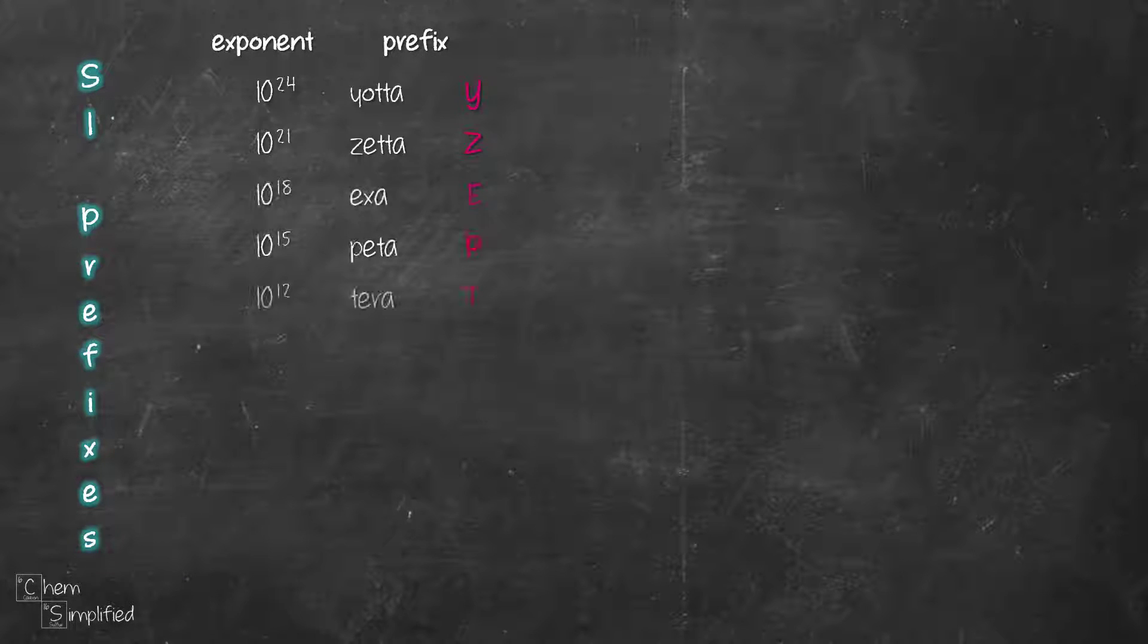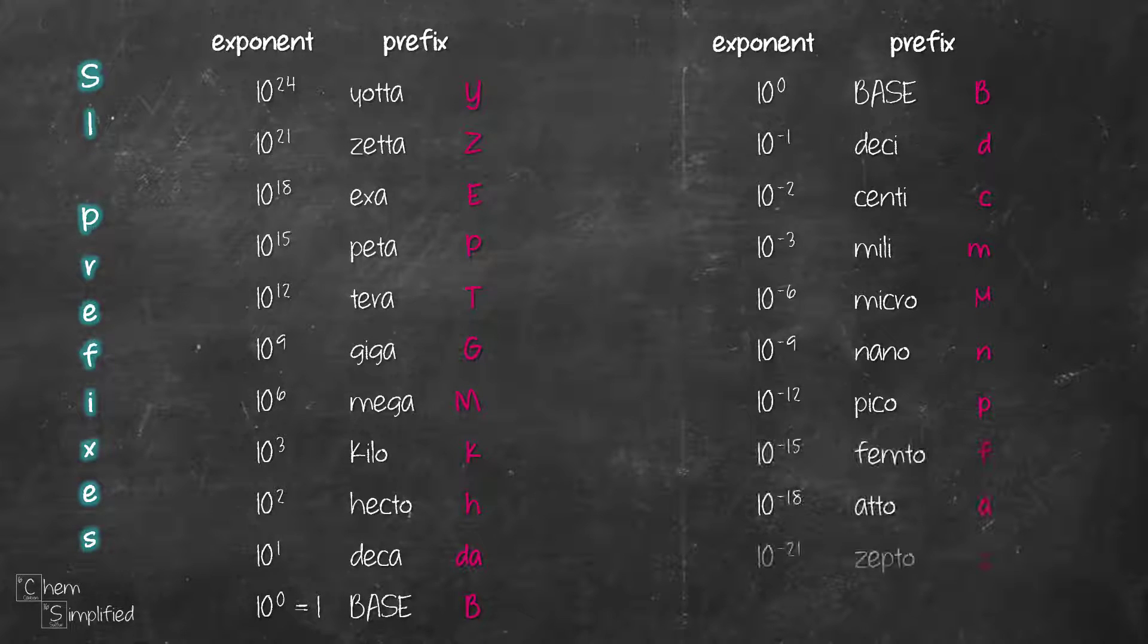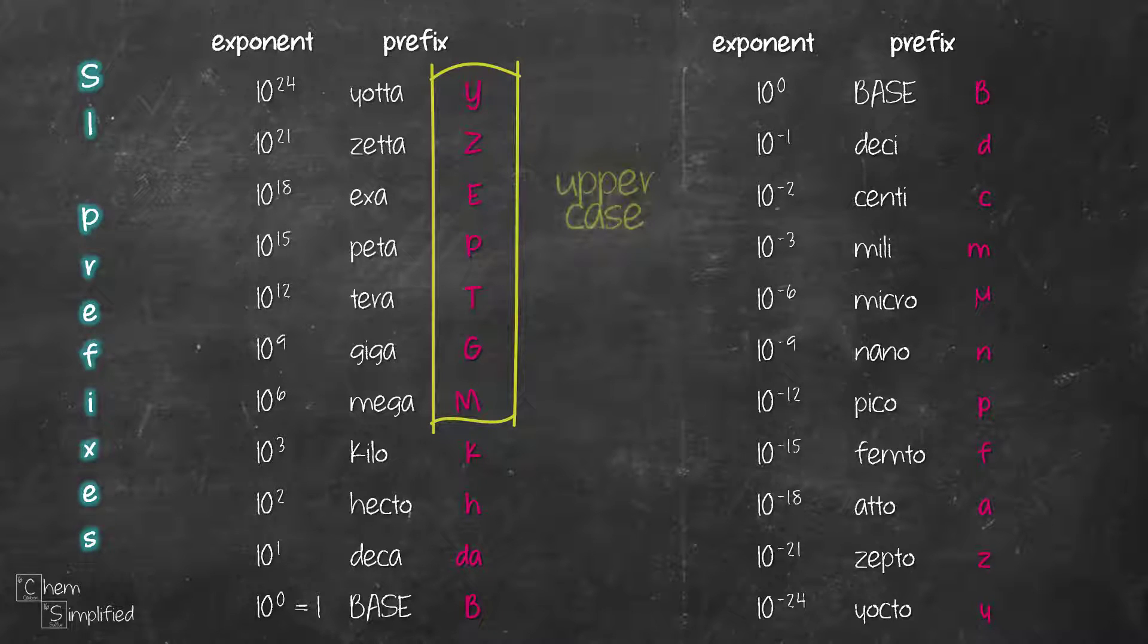Here are the 20 SI prefixes that we need to remember, starting from Yoda all the way to Yocto. Each prefix has its own abbreviation. Note that the first seven abbreviations are in uppercase while the rest are in lowercase.